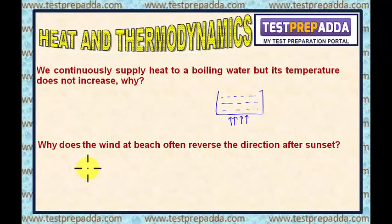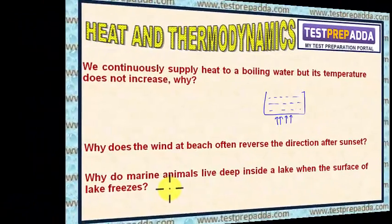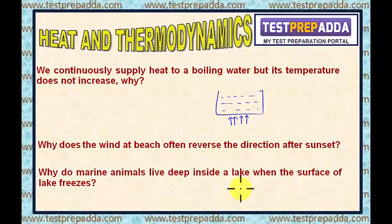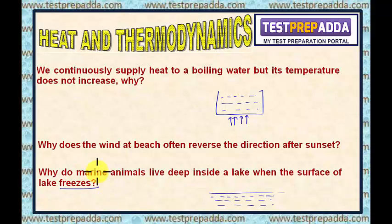Another question: if you visit the sea beach, you will realize that wind reverses direction after sunset. So, why does the wind at the beach often reverse direction after sunset? And in winter season, when the surface of a lake gets frozen, how do marine animals live — why do they live deep inside the lake when the surface freezes? You will be able to answer this after studying heat and thermodynamics.